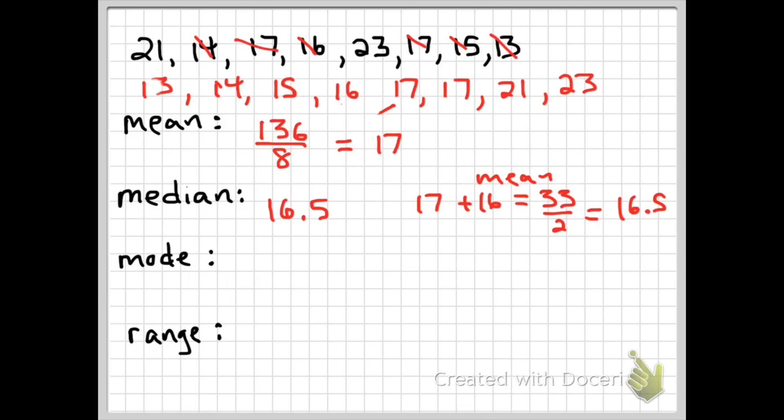And then for our mode, remember we said our mode is the number we see most frequently. You could have more than one, but as we see here we have two 17s, so 17 is our mode. There's really no math involved, this is really a matter of counting.